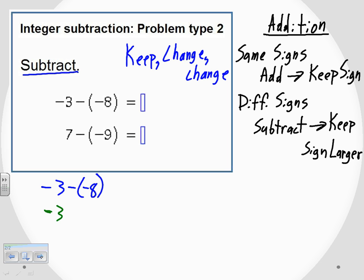But then, after I keep the first one, I'm going to change the operation from subtraction into addition. So this subtraction becomes adding, and then I'm going to change the sign of the last number, so that negative 8 becomes a positive 8.